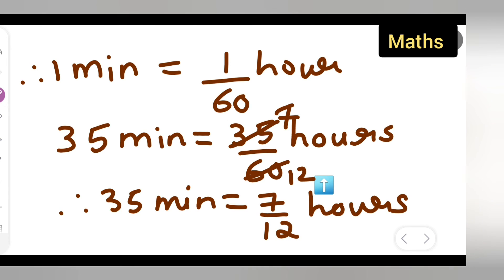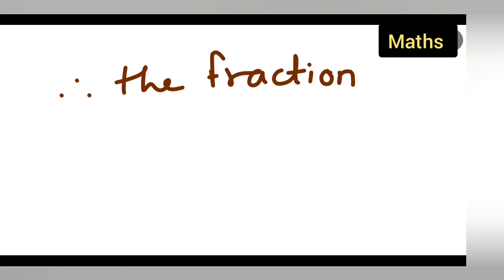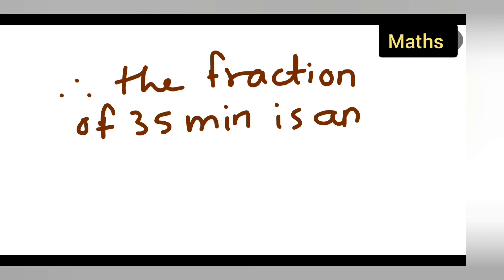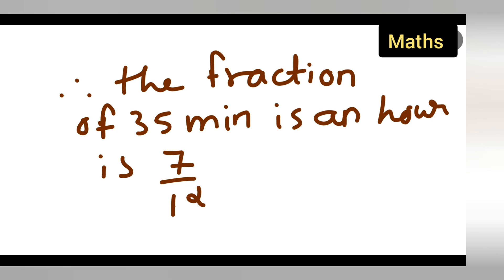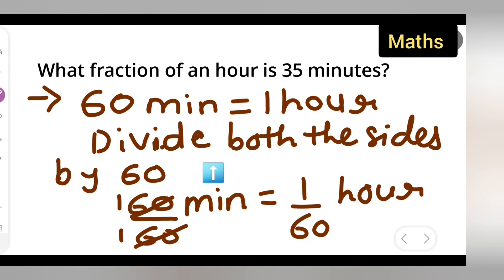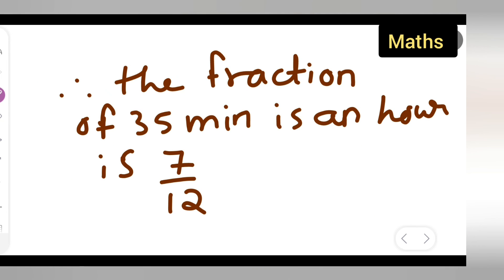Therefore, the fraction of 35 minutes in an hour is 7 upon 12. I hope you have understood the answer to today's question. The fraction of 35 minutes in an hour is 7/12. Thanks for watching — for any doubts or queries, you can comment below.